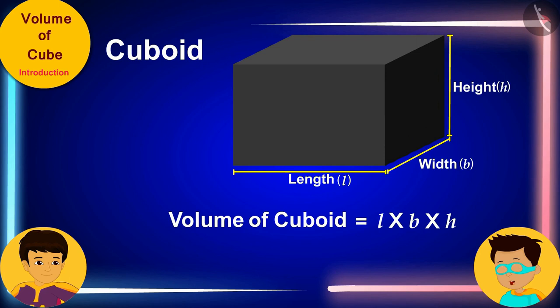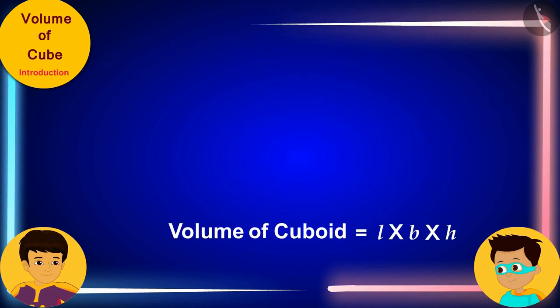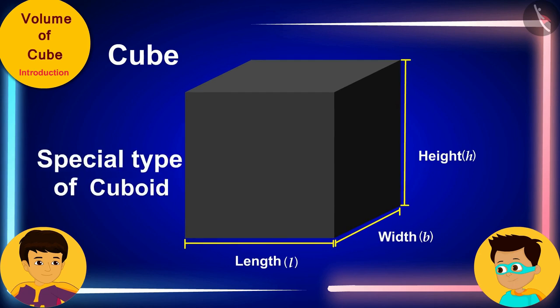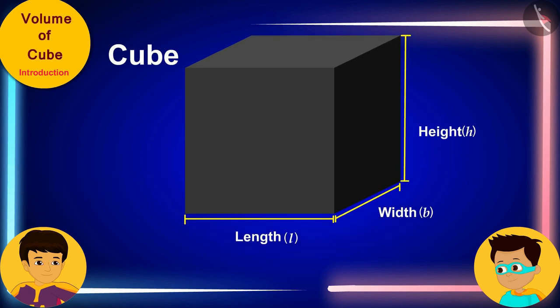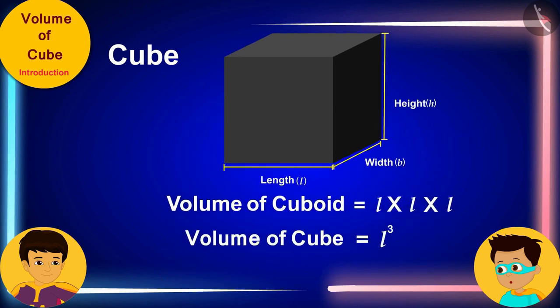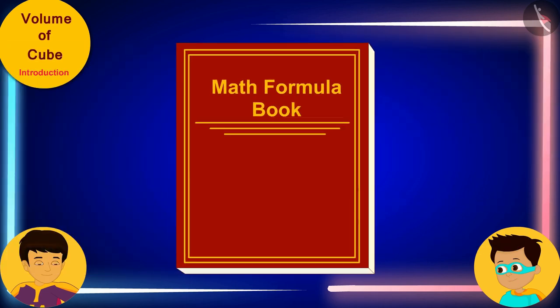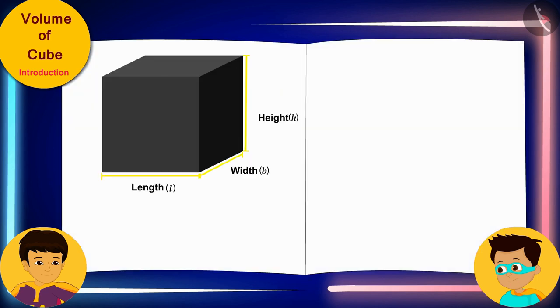Perfect! Now, do you know that every cube is also a special type of cuboid whose length, width and height are exactly the same. Therefore, if we write L instead of width B and height H in the volume of the cuboid, then we will get the volume of a cube of dimension L. Let me quickly write this in my math formula book. Good! The volume of any cube is equal to L cube.